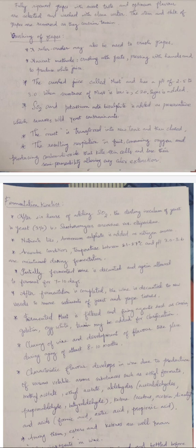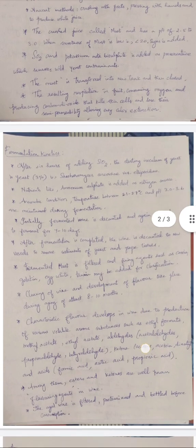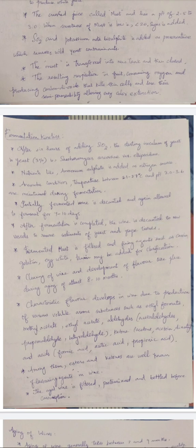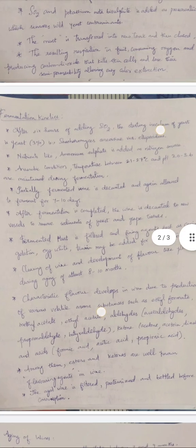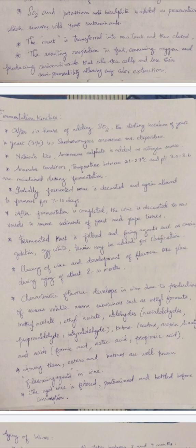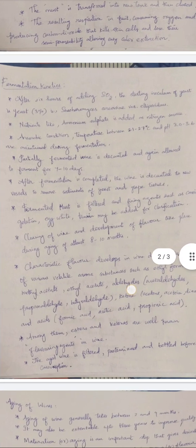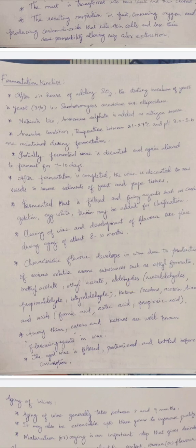After six hours of adding sulfur dioxide, the starter inoculum — brewer's yeast, more technically Saccharomyces cerevisiae var. ellipsoidus — is generally added at a three percent concentration. For example, if the fermentation volume is 300 ml, 9 ml of yeast solution is added; per 100 ml, 3 ml is added. Nutrients like ammonium sulfate are also added as a nitrogen source for yeast multiplication.